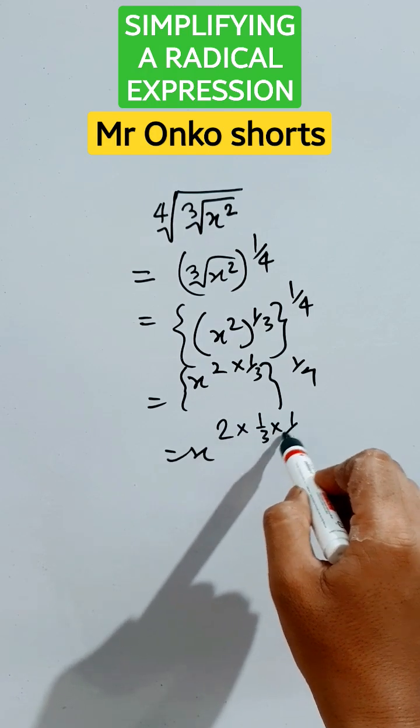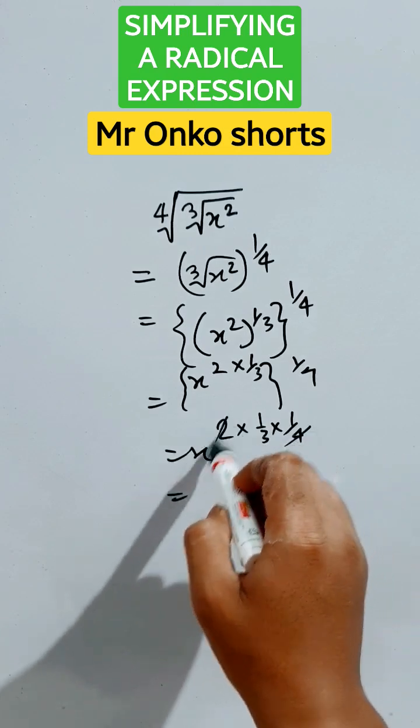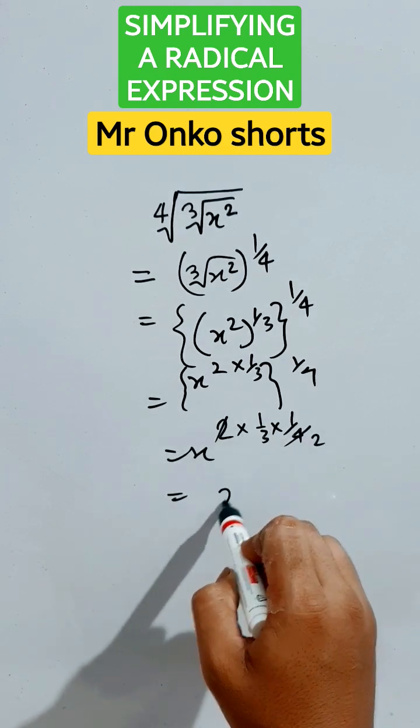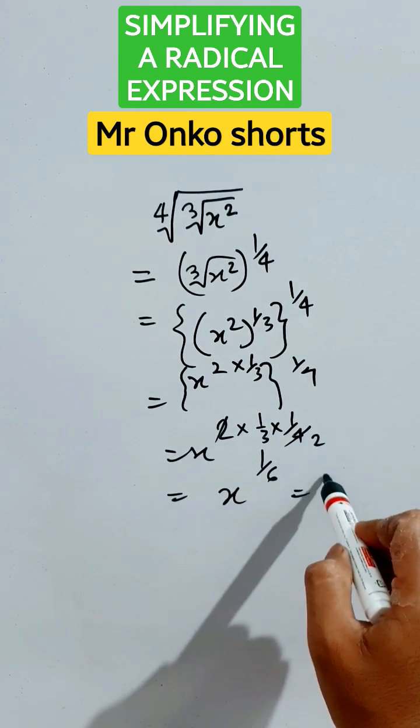Now it is 2 times 1 by 3 times 1 by 4, then it is x to the power 1 by 6. The answer is sixth root of x.